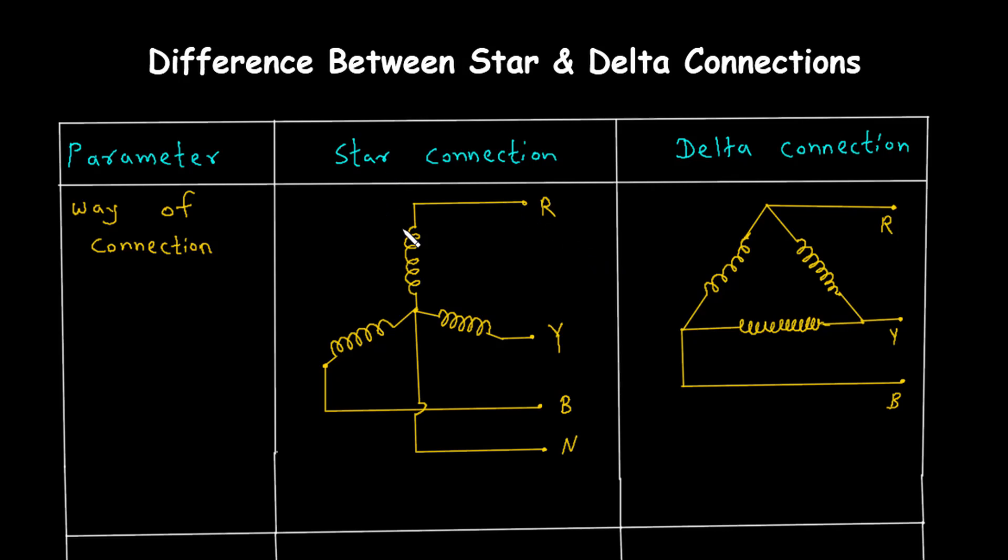Let's start with the star connection, also known as the Y connection. Imagine we have three coils or windings, each representing one phase of a three-phase system, which we'll label as R for red, Y for yellow, and B for blue.